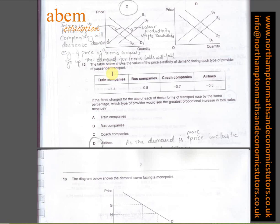In question number twelve, the table shows the value of the price elasticity of demand facing each type of provider of passenger transport. If the fares for the use of each of these forms of transport rose by the same percentage, which type of provider would see the greatest proportional increase in total sales revenue? We are looking for the industry which is the least price elastic.